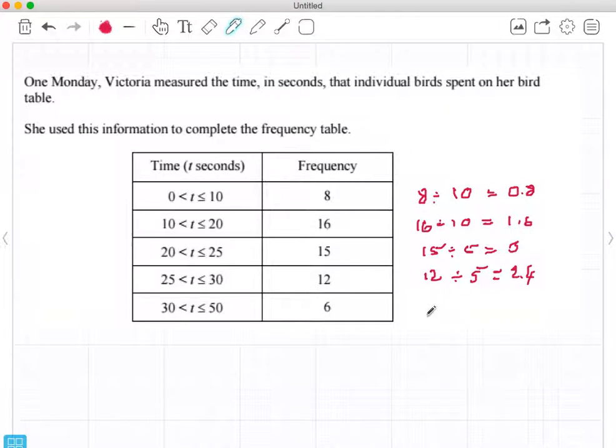So I'm going to draw all these in in just a minute. And the final one, which is 6, and this is divided by 20. 6 divided by 20 is 0.3.